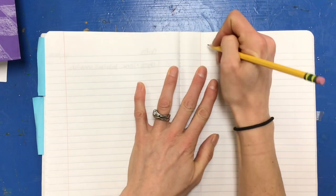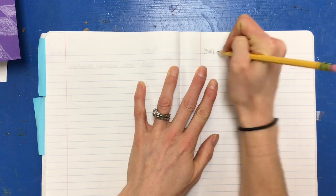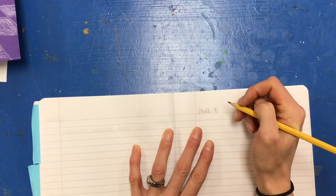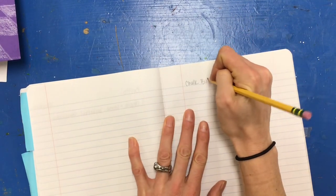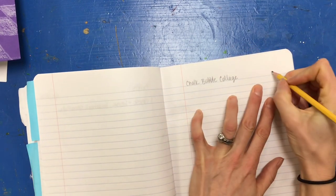So when you start today, I'd like you to first put a title on your paper. So chalk bubble collage, then today's date.